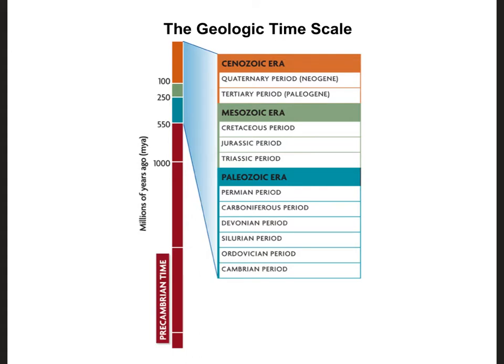It was during the Cambrian period that we have what we call the Cambrian explosion, or an explosion of life. There was life around during the Precambrian time — this is when we saw the first prokaryotes and even the first eukaryotes — but it wasn't until the Cambrian explosion that we really saw a bunch of life, animals and plants, start to evolve.